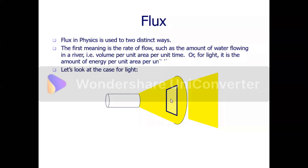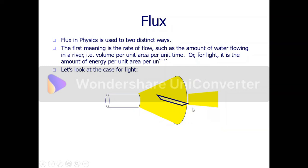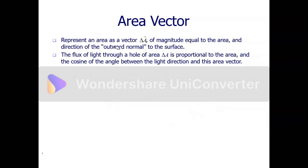That is why we are introducing the concept of the area vector. The area vector of a certain area — if you have this area, you can think of the area vector as a vector whose magnitude equals the area. So if this is your length and this is your width, the magnitude of this vector is just length times width. That is the magnitude. Now what about the direction? The direction is normal, meaning it is perpendicular to this area and it is outward.